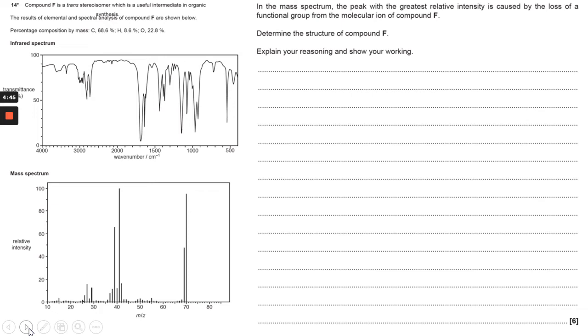Let's have a look at the question and highlight things that are important. They say that compound F is a trans-stereoisomer. They give you the infrared spectrum, the mass spectrum. They ask you to determine the structure and explain your reasoning, showing your working, which includes mathematical calculation. The percentage of composition by mass is provided to allow for this.